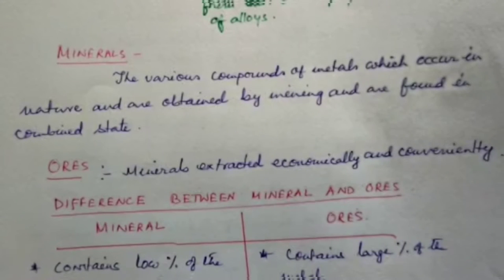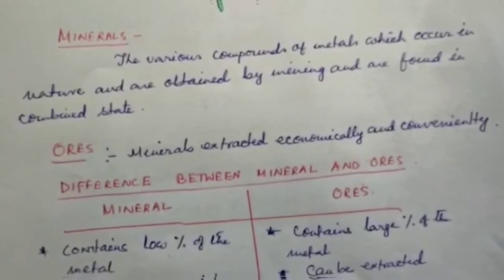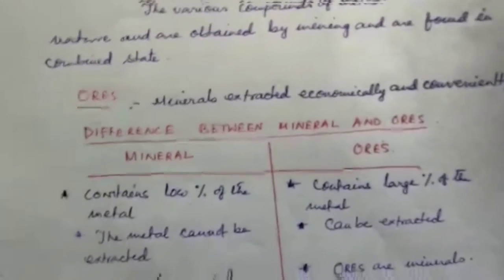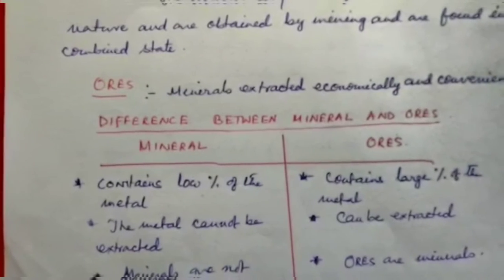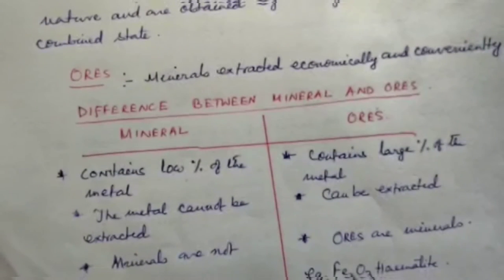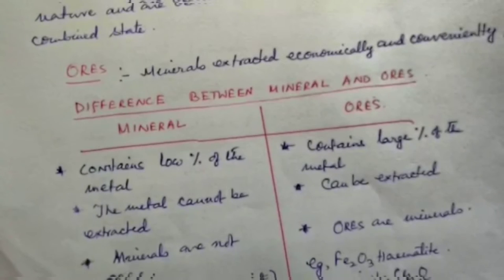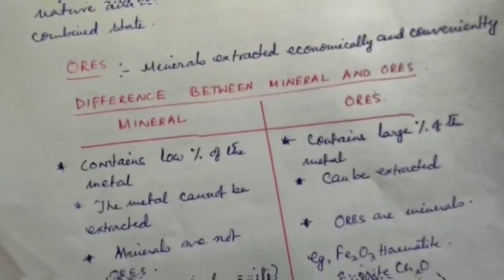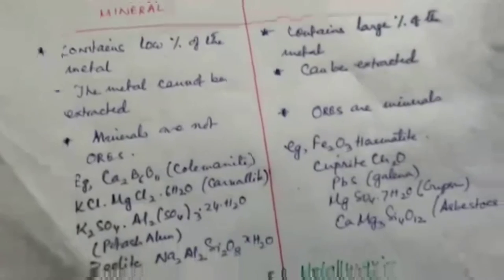Not all minerals can be called ores, but all ores are minerals. The difference: minerals contain a low percentage of the metal, whereas ores contain a large percentage of the metal. Metals cannot be extracted from minerals, whereas metals can be extracted from ores. All minerals are not ores, but all ores are minerals.